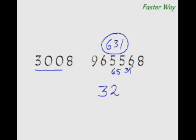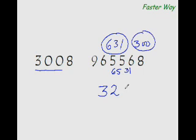Our next dividend would be 316 minus 8 times 2, that is 16. So 316 minus 16 is 300. 300 goes into 300 one time, so write 1 here — that leaves us with 0 remainder. Our next dividend would be 8 minus 8 times 1, which is 8, so 8 minus 8 is 0. We know this is our answer.